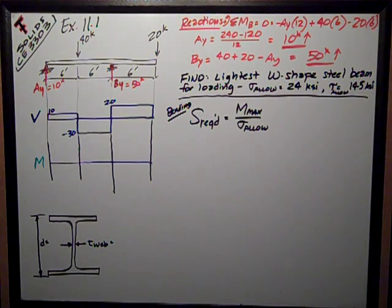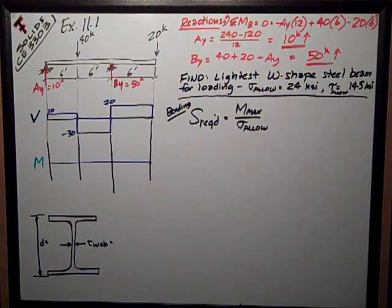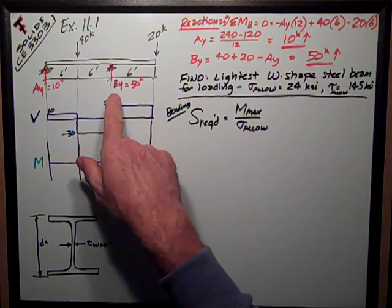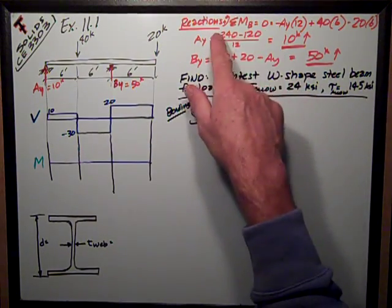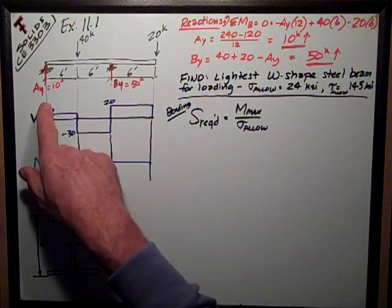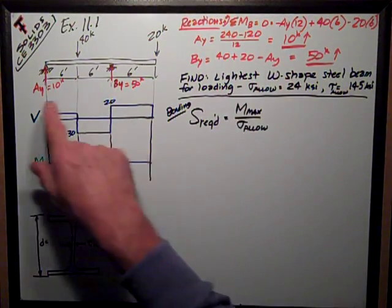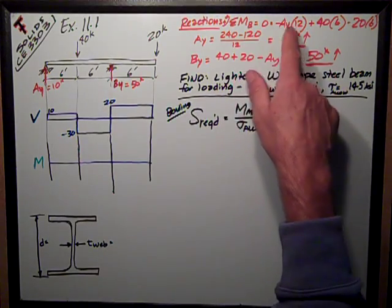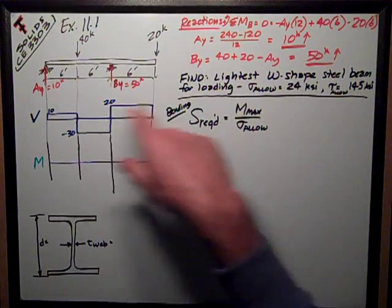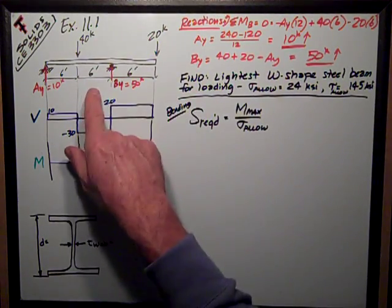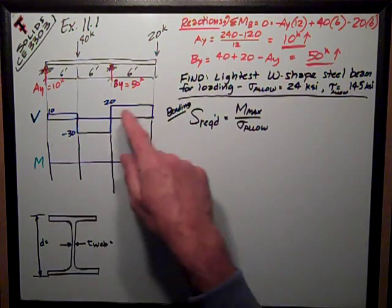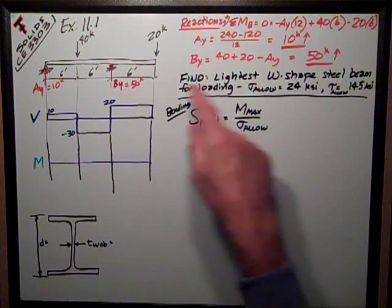Always when we want to solve for reactions, we want to sum moments, and so I summed moments about point B, which eliminates the reaction at B. Counterclockwise is positive. I have negative, because it's clockwise moment around B, negative AY times 12 feet, plus, because it's counterclockwise, 40 kips times 6 feet, minus, because it's clockwise, 20 kips times 6 feet.